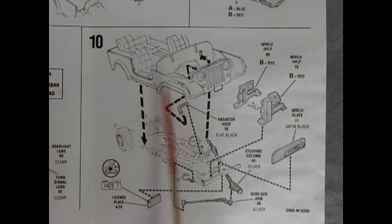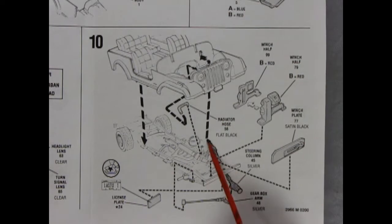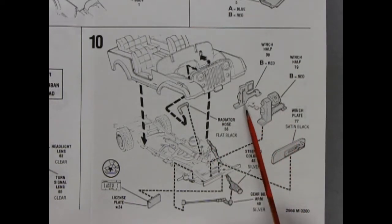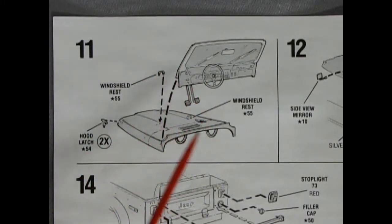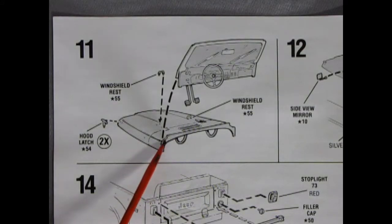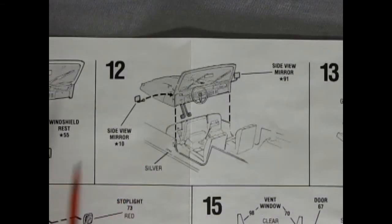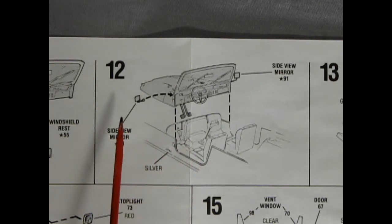Panel 10 shows our completed body being mounted onto the chassis and all the components you need in between such as the gearbox and steering column and the winch front and back as well as winch plate. Panel 11 shows our completed dashboard and windshield assembly being glued to the back end of the cowl. This completed assembly then gets attached to the body in panel 12.